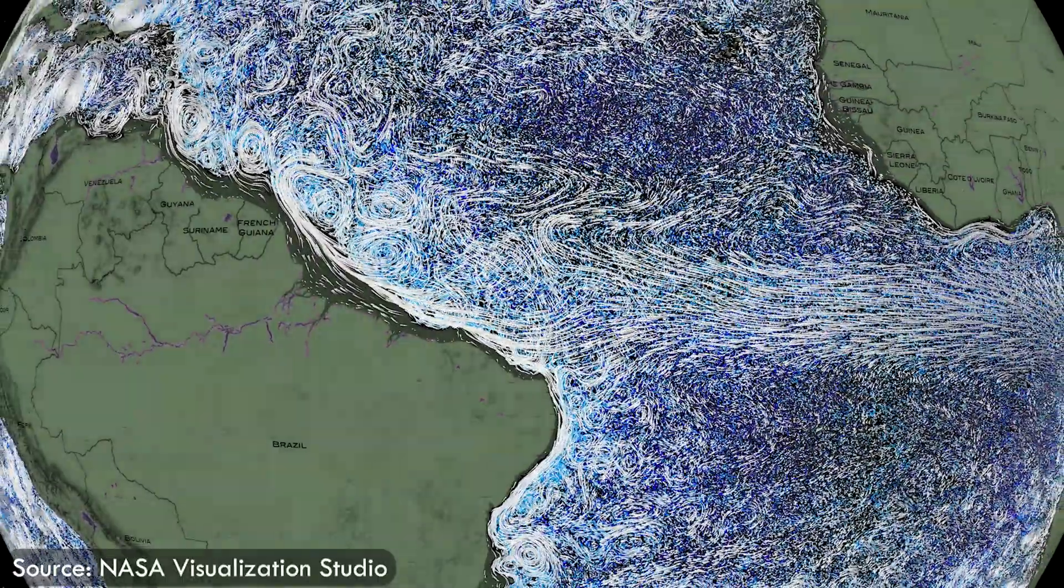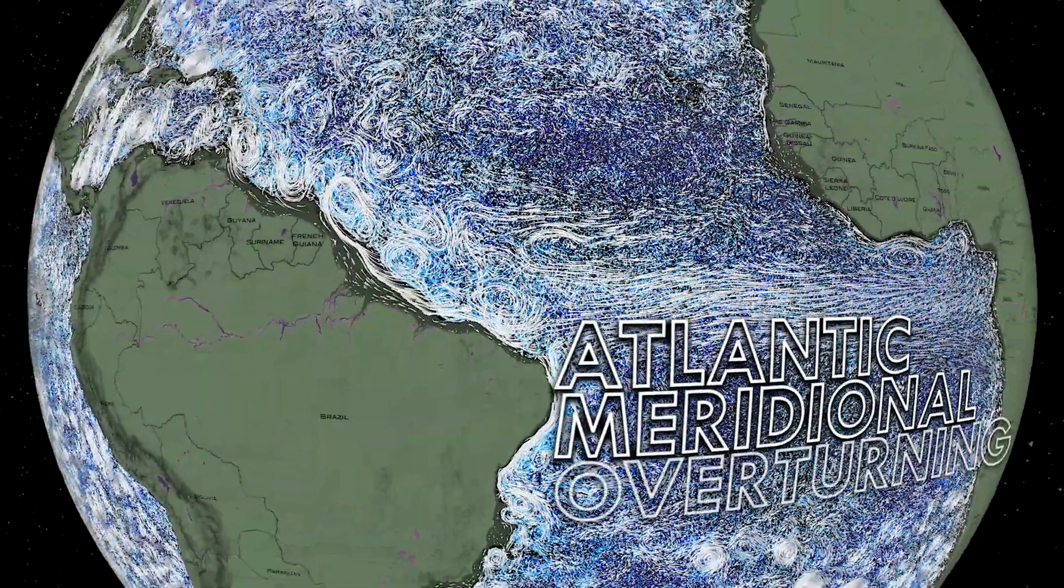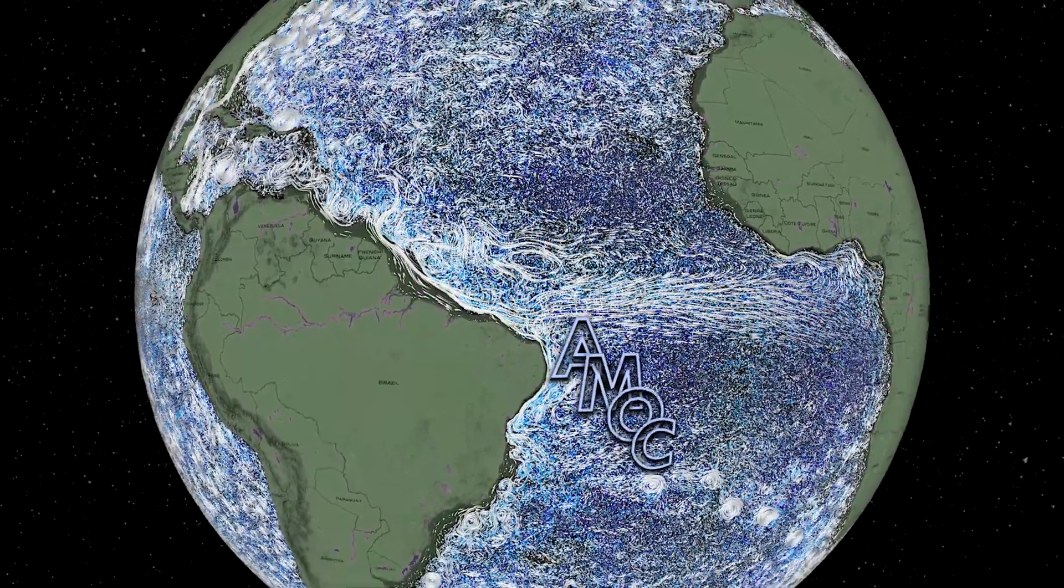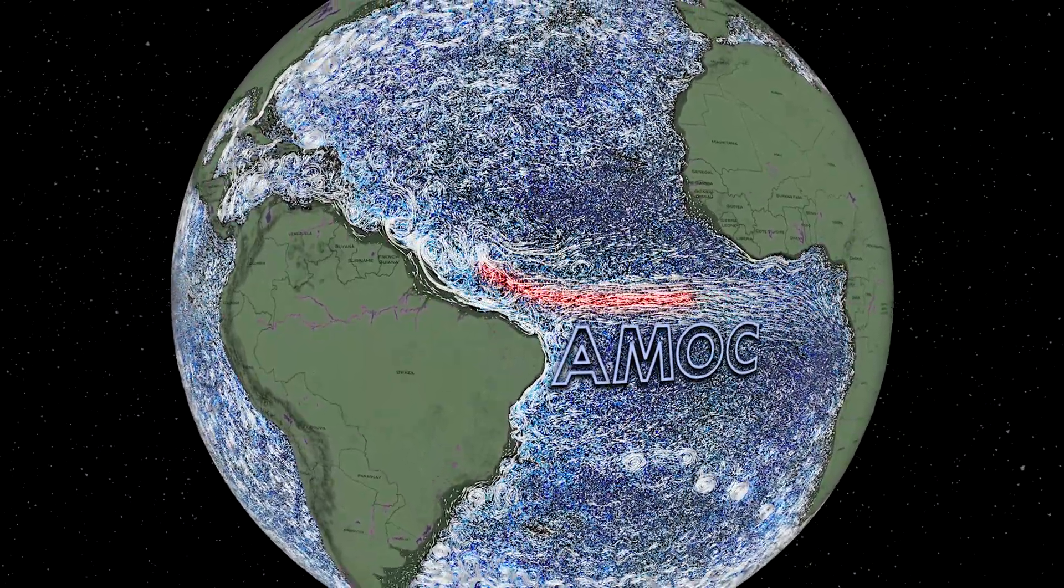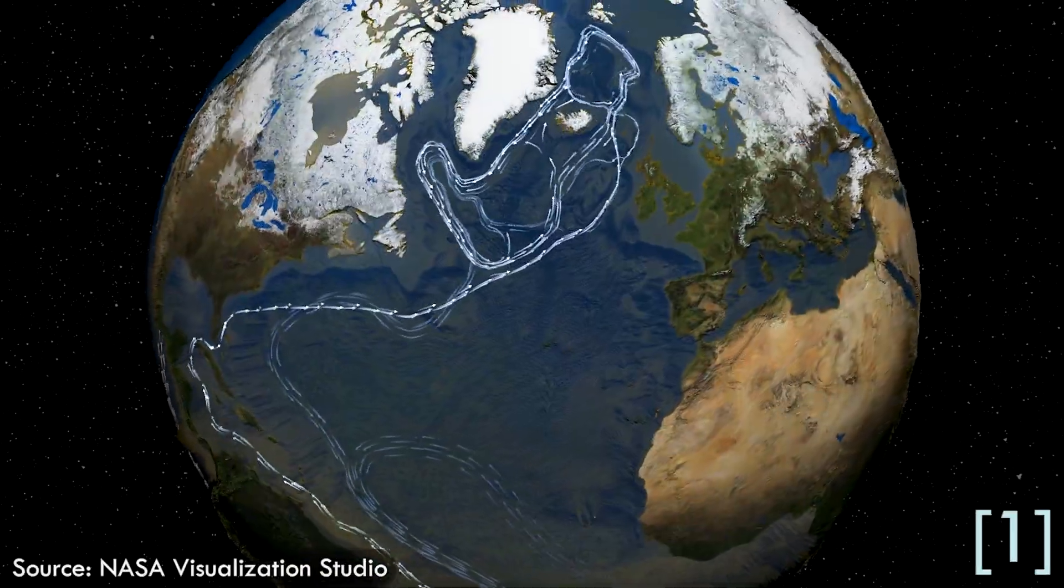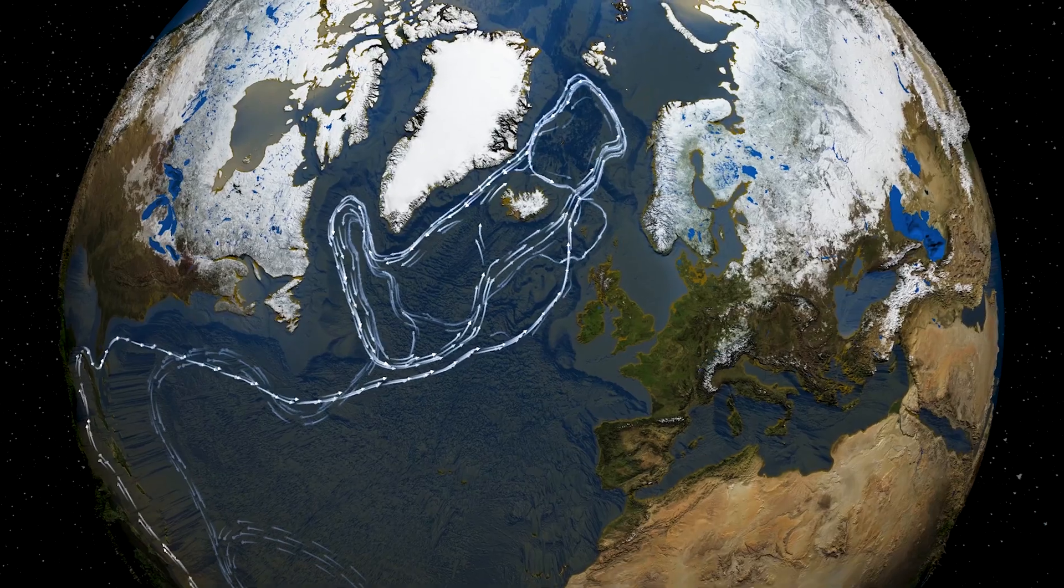One of the largest of these currents is the Atlantic Meridional Overturning Circulation, also known as the AMOC. This current continuously moves warm water northward along the Gulf Stream, playing a crucial role in European and North American climate.